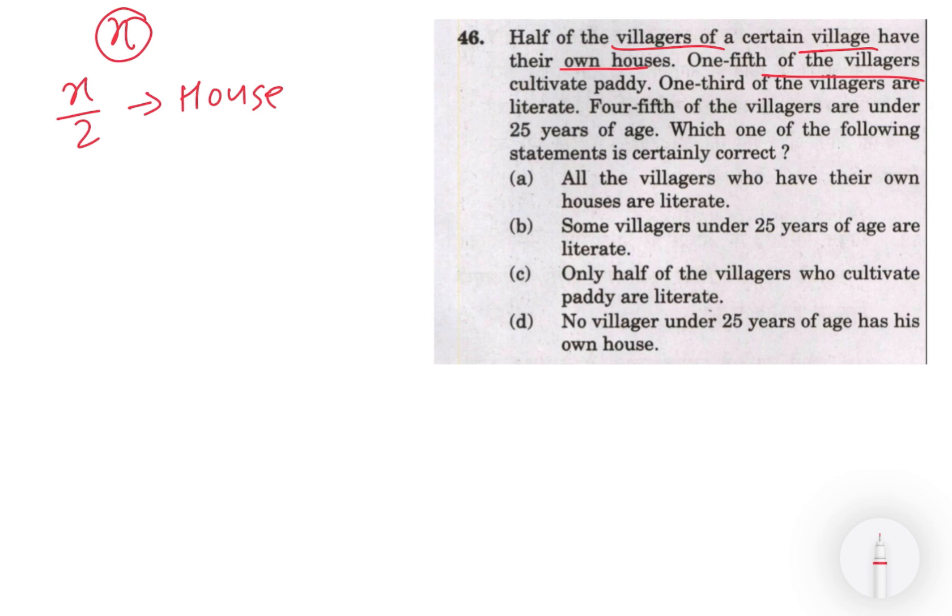One-fifth of the villagers cultivate paddy, so x by 5 paddy cultivate. Second, one-third of the villagers are literate, so one-third, that means total one-third of the villagers are literate. Next, four-fifth of the villagers are under twenty-five years of age, so 4 by 5 x - yeh kya hai, under twenty-five, that means less than twenty-five years.